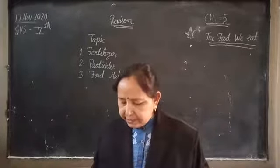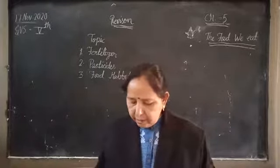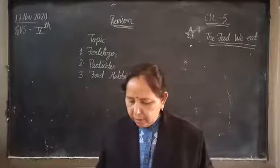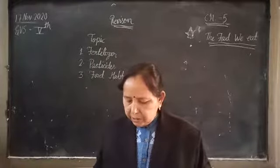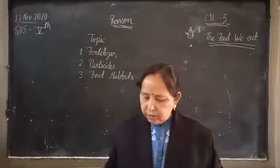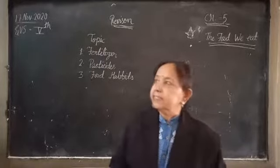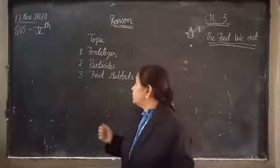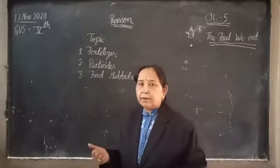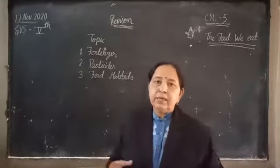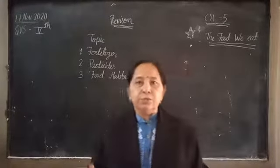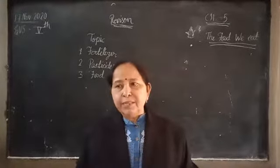Examples of pesticides are DDT and malathion, and these are some of the pesticides that you can see in our house.